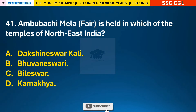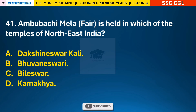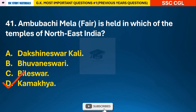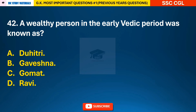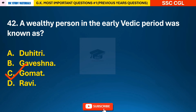Question 41: Ambubachi Mela Fair is held in which of the temples of Northeast India? — answer D: it is held in Kamakhya Temple, which is in Assam. Question 42: A wealthy person in the early Vedic period was known as — answer C: the wealthy person in the early Vedic period was known as Gomat.